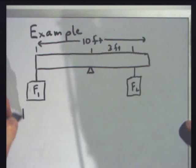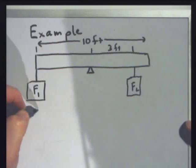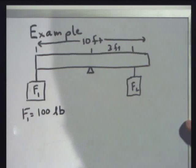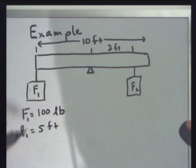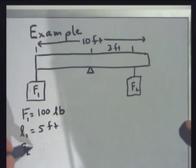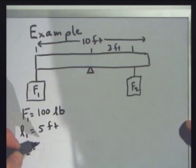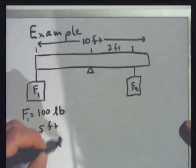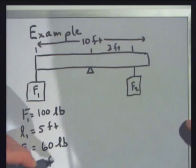So I'll say F1 is 100 pounds, just making that up. Let's say L1, since it's at the very end, it's going to be five feet. F2, it's on the other side. F2 is 60 pounds, and L2 is three feet, that second moment arm.